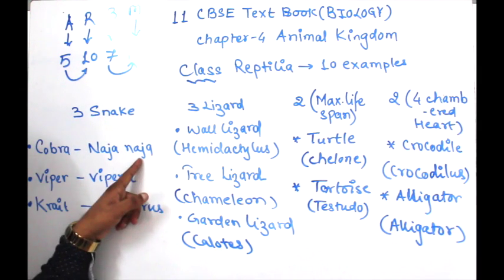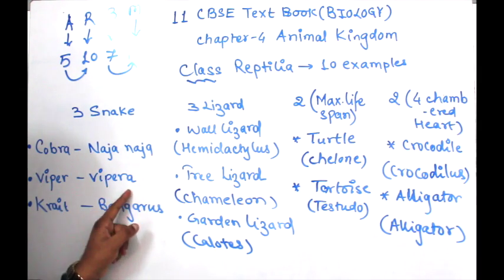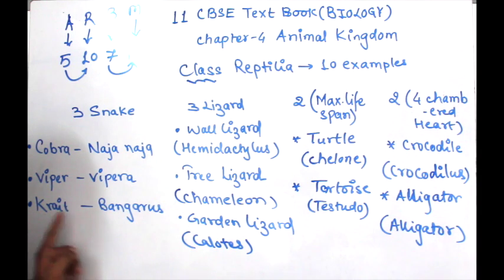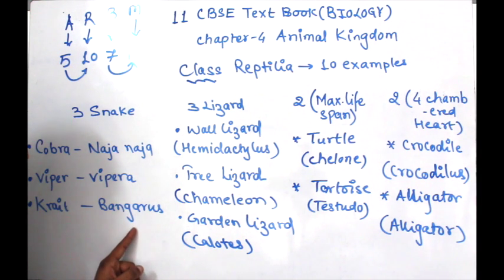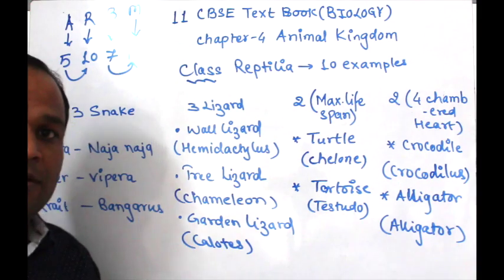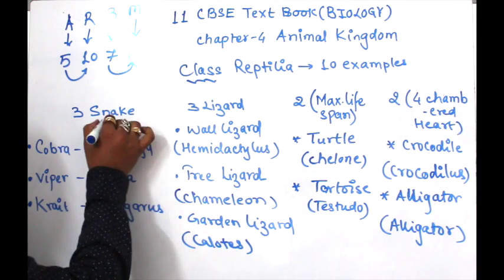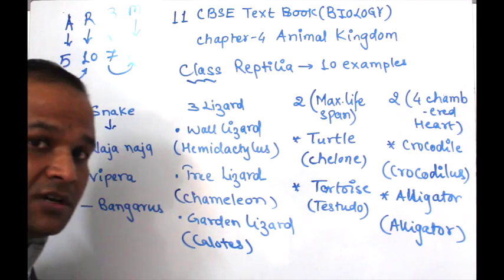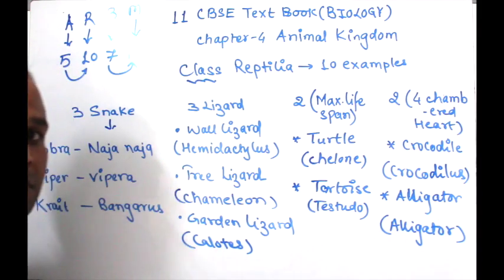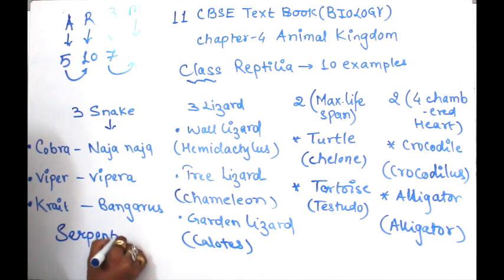The 3 snakes are: Cobra (Naja naja), Viper (Vipera), and Krait (Bangarus). All 3 are poisonous snakes. The study of snakes is known as Serpentology.